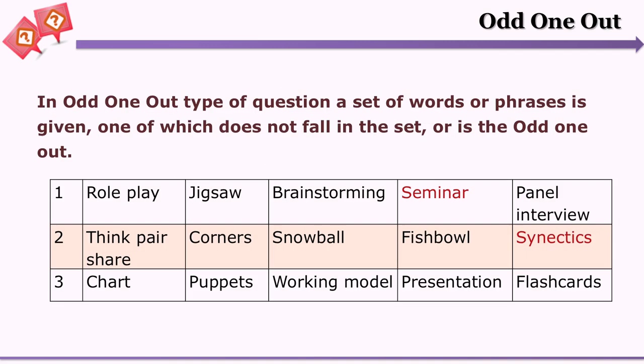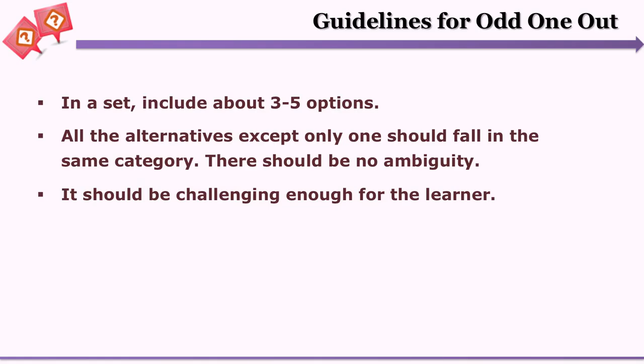The next objective question type is odd one out. Here the learner is given four to five examples, out of which only one is odd. On the screen you can see one such example. For designing odd one out questions: include about three to five options, not more; all alternatives except one should fall in the same category and that category should be clearly evident; there should be no ambiguity; and it should be challenging enough — not so easy that the learner faces no challenge at all.